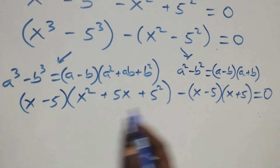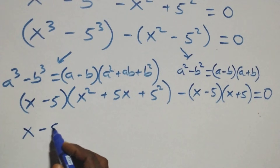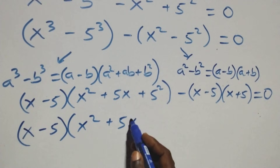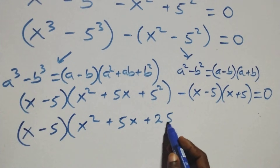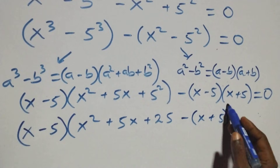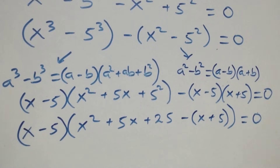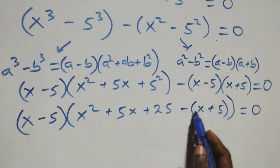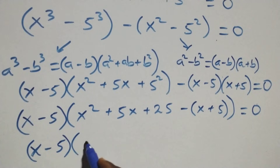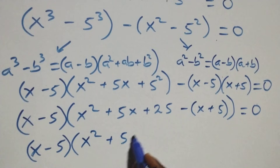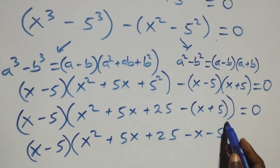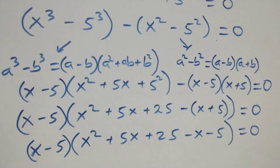From here, (x minus 5) is common. Factoring it out: (x minus 5)[(x squared plus 5x plus 25) minus (x minus 5)] equals to 0. That is, (x minus 5)(x squared plus 5x plus 25 minus x plus 5) equals to 0.